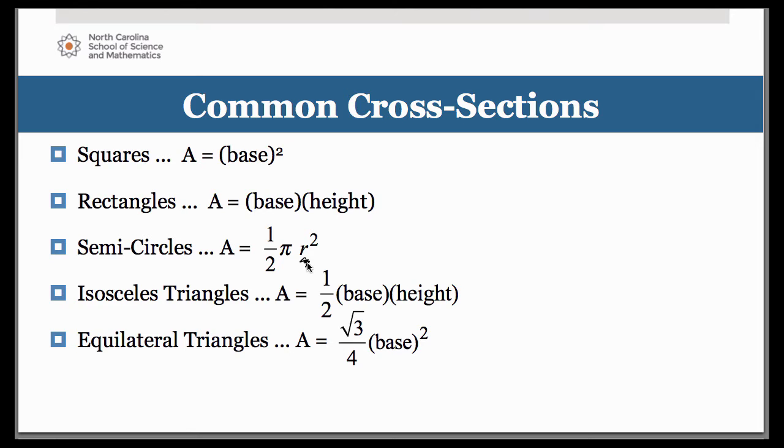An isosceles triangle is simply going to be your usual area of a triangle formula: one half the base, and remember the base length is the length of your representative rectangle, multiplied by the height. And finally equilateral triangles is one that you'll see. You might remember that we saw one in the demonstration with the applet. The area of an equilateral triangle of course is square root of three over four times the base length squared. Think of it as it's almost a proportional part, a fractional part of the area of the square. It's square root of three fourths of the area of the square.